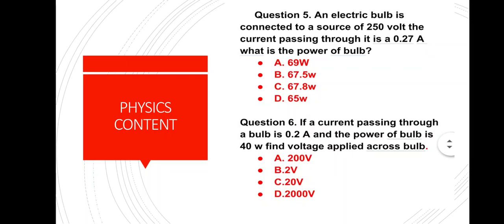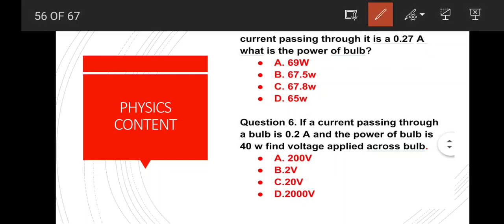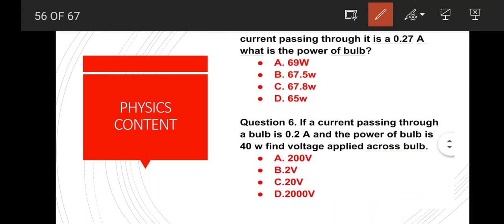Question number 6: If a current passing through a bulb is 0.2 ampere and the power of the bulb is 40 Watt, find the voltage applied across the bulb. The formula to use is V = P / I. P is 40 Watt and I is 0.2 ampere. So 40 upon 0.2 gives the correct answer: option A — 200 Volt.